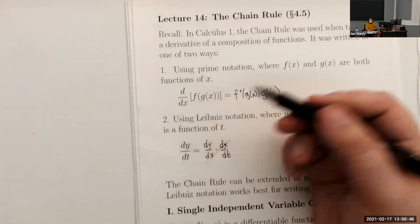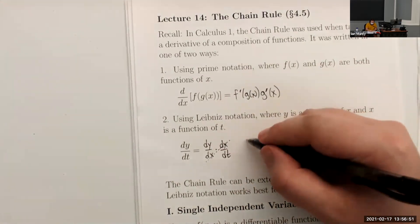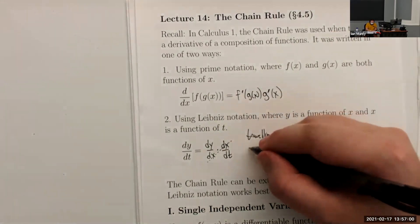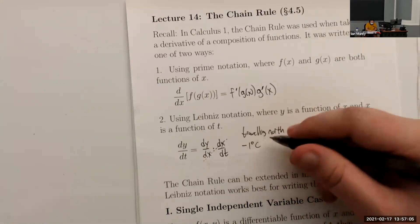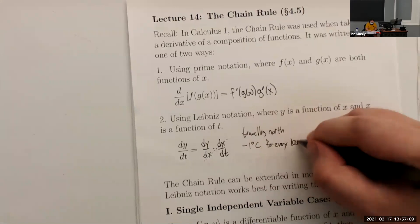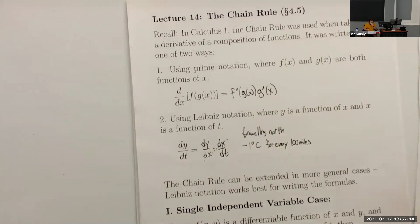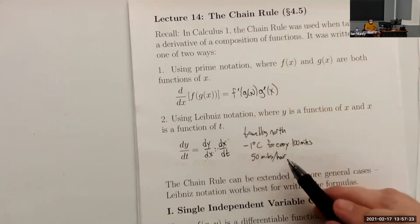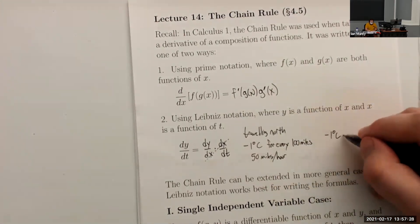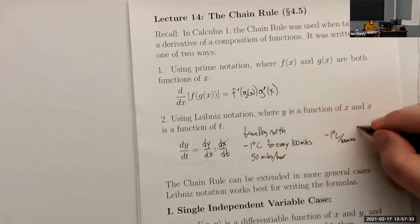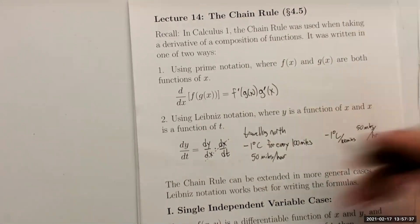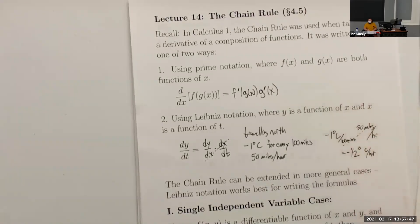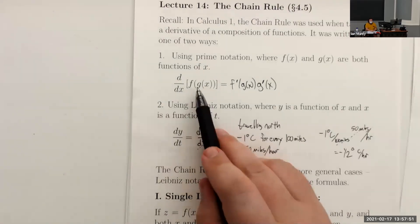Why don't we just write F prime of G prime of x? Here's a practical example: suppose we're traveling north and lose one degree Celsius per 100 miles. If we're going 50 miles per hour, then the rate of change of temperature with respect to time is negative one degree per 100 miles times 50 miles per hour. The intermediate units cancel and we get negative one-half degree Celsius per hour. That's the intuition behind the chain rule.